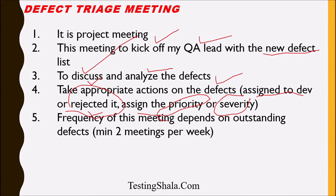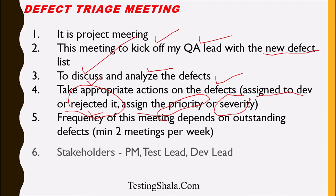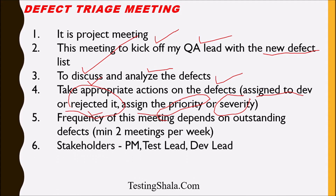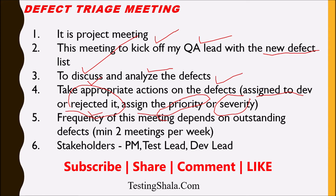The main stakeholders for this defect triage meeting are the project manager, test lead, and dev lead. To recap: this is a project meeting kicked off by the QA lead.